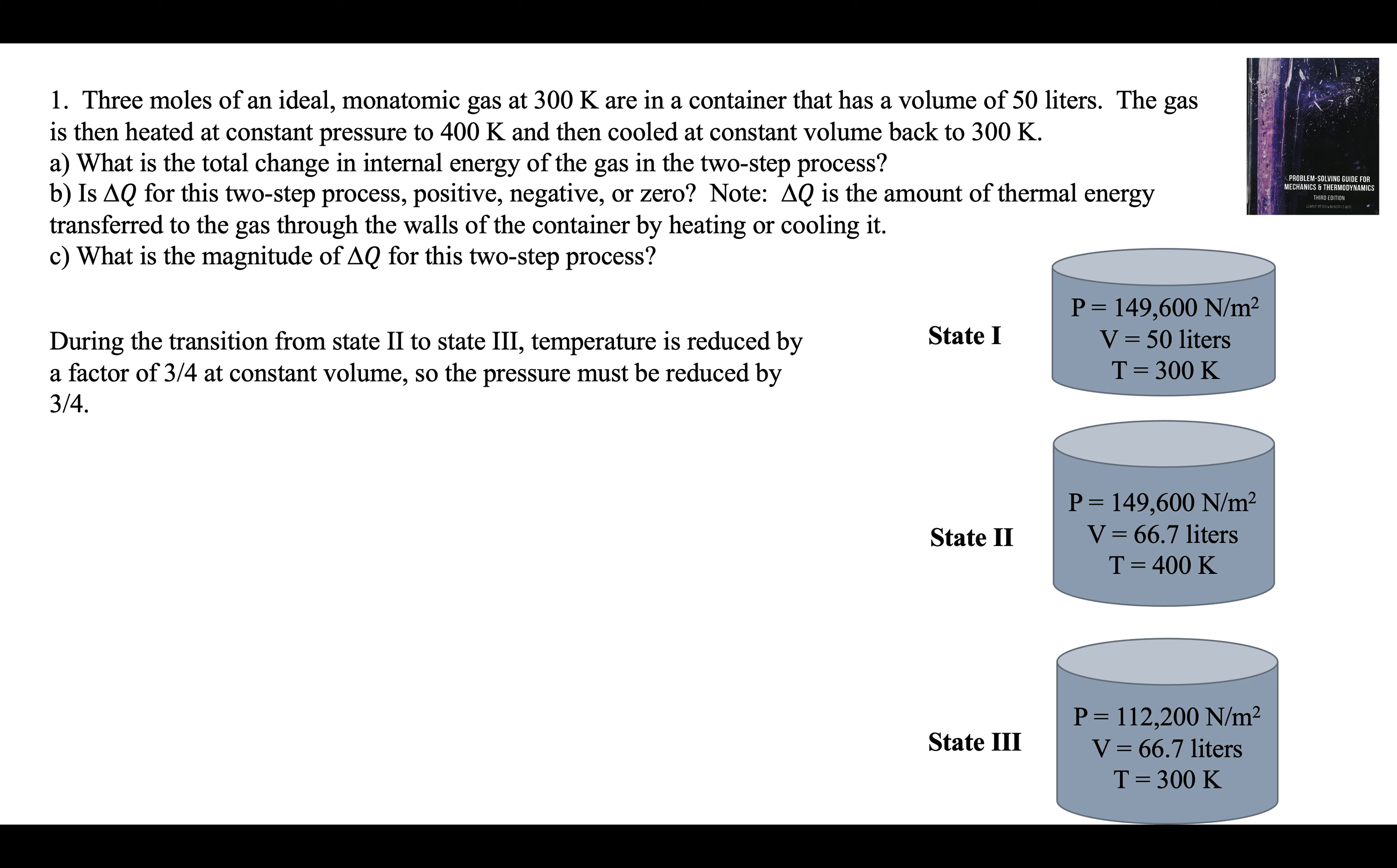During the transition from two to three, the temperature is reduced by a factor of three-fourths. It goes from 400 to 300, so the pressure must be reduced by the same amount. Three-fourths of 149.6 is 112.2. So we didn't have to use PV equals nRT. We can just use some simple proportions.